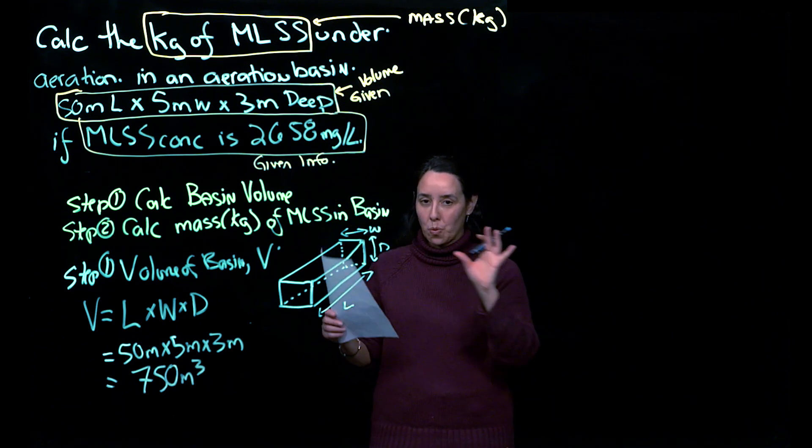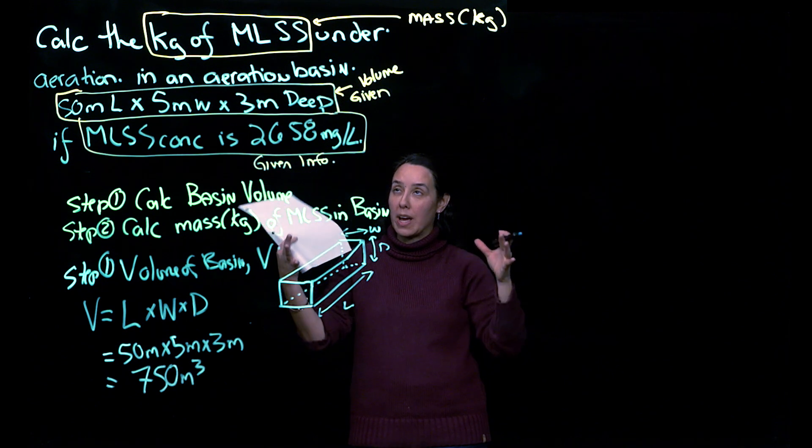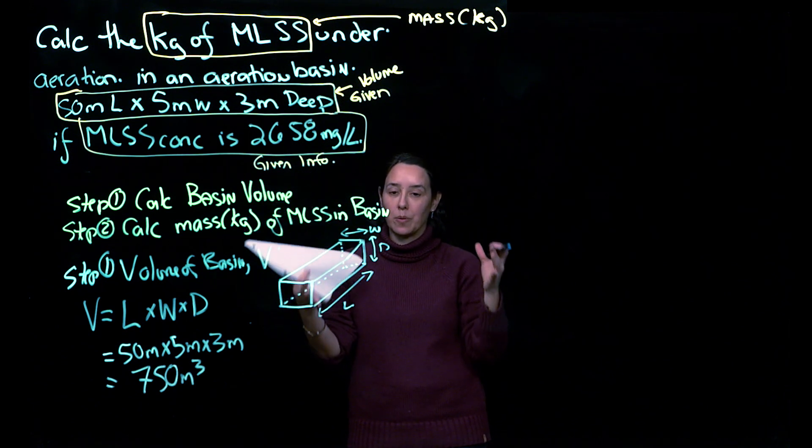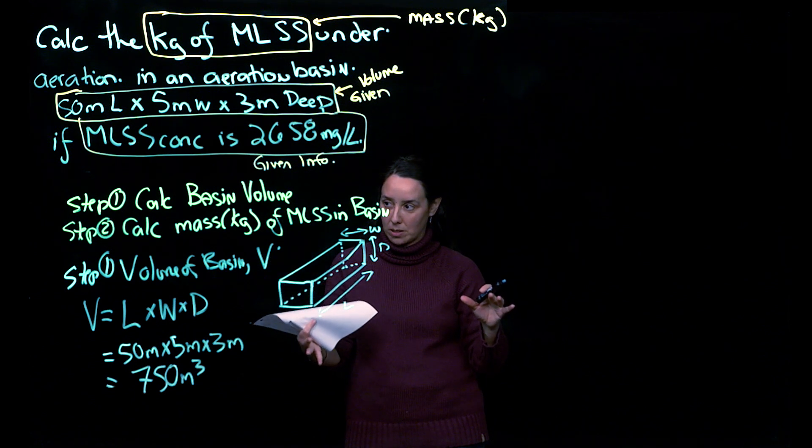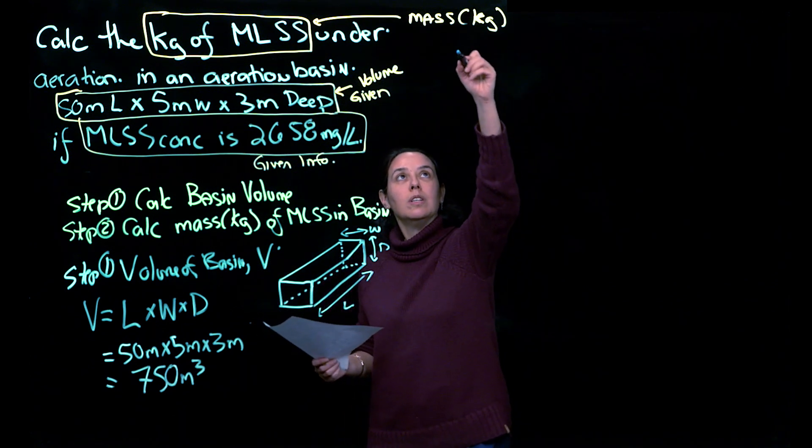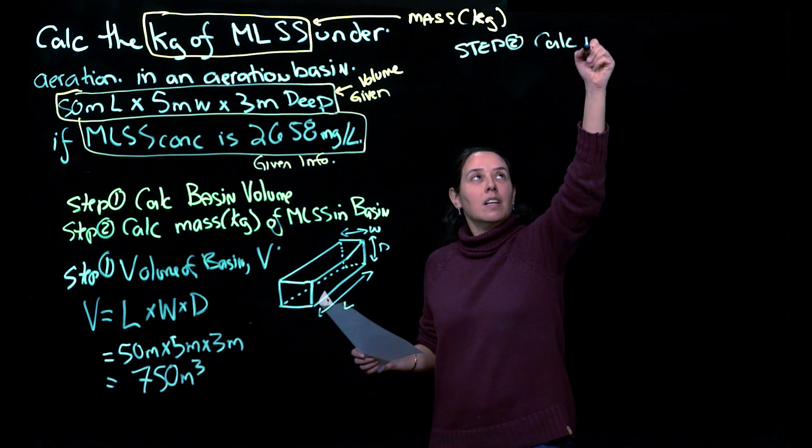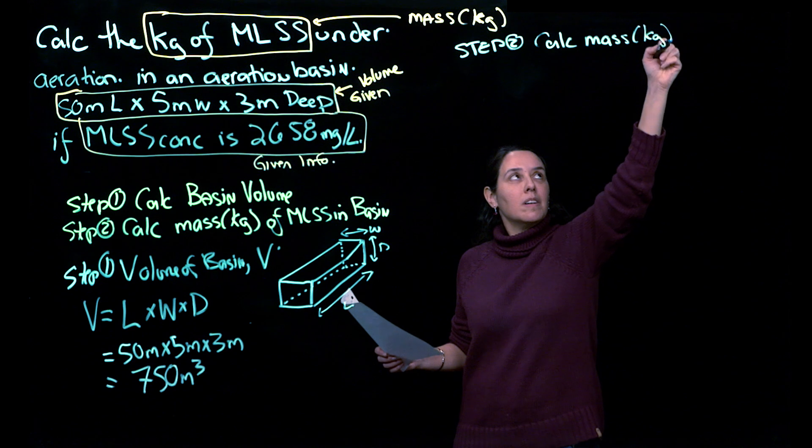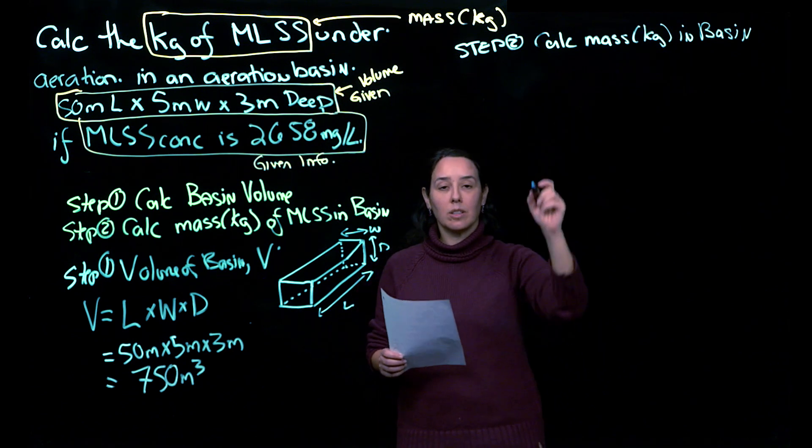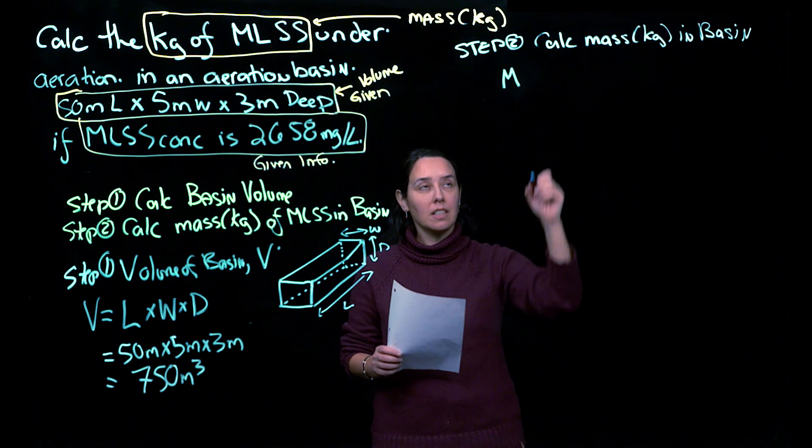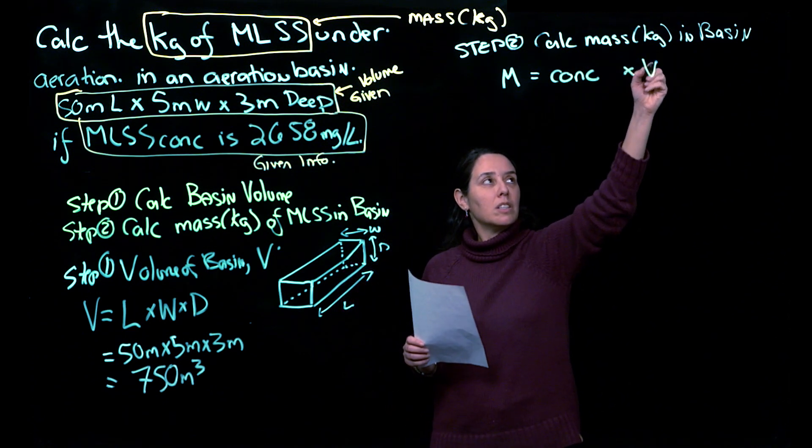Okay, so now we've got that. And what we're trying to do is figure out how much, if you were to take that basin and you could weigh the MLSS in it, how much is that? What is that mass of MLSS in the basin? Right now we just have it as a concentration value, but not a total mass value. So step two, which we'll solve, calculate mass in our aeration basin. The formula for calculating that mass is concentration times V.